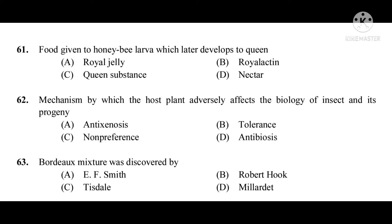Question number 61: Food given to honey bee larvae which later develops into a queen. The correct answer is royal jelly. Question number 62: Mechanism by which the host plant adversely affects the biology of an insect and its progeny. The correct answer is antibiosis.